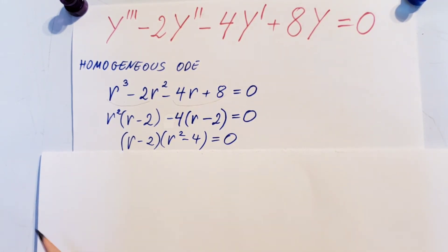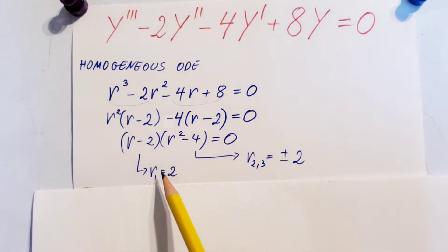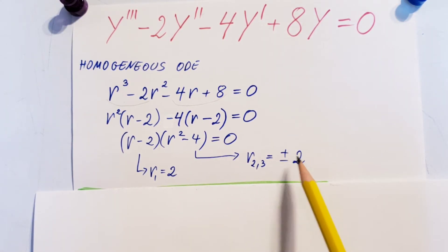Now from this it's much easier for us to figure out our roots. r1 will be 2, and from here r2 and r3 will be plus and minus 2.